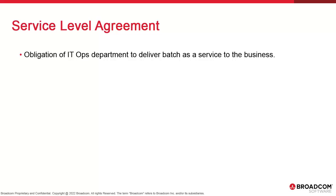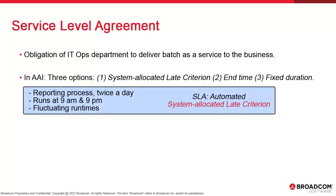There are three possible options to define an SLA. The first is the automated option called System Allocated Late Criterion. AAI continuously calculates averages based on ongoing executions, and this number keeps evolving over time. Fluctuating runtimes mean greater SLA variations. This is the default method.